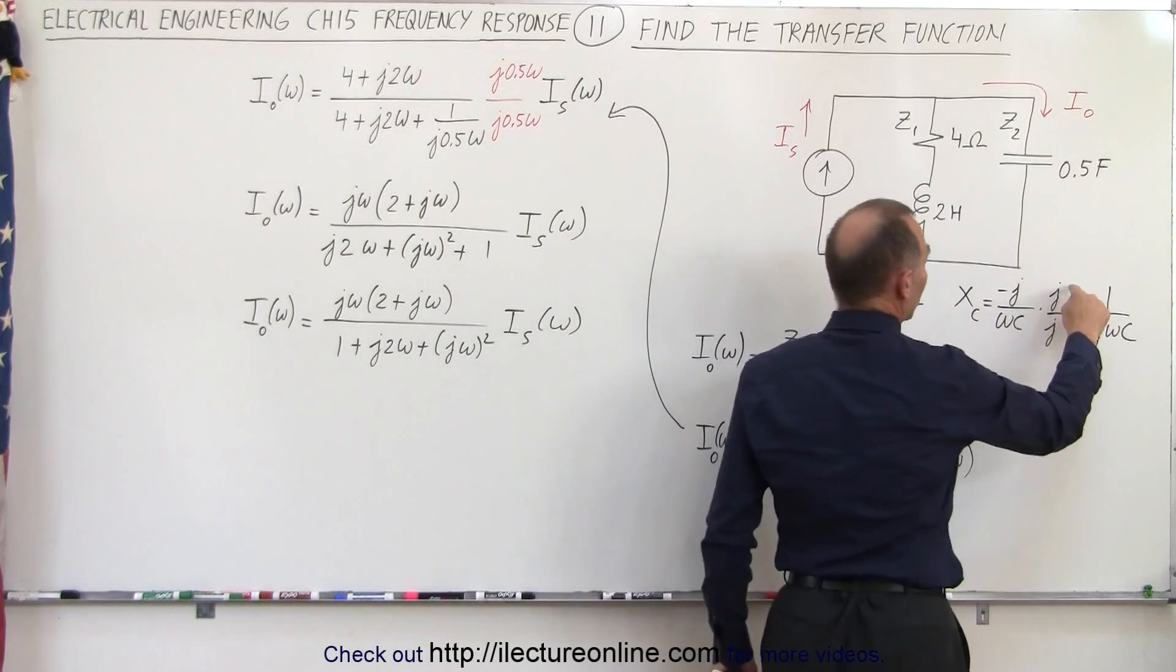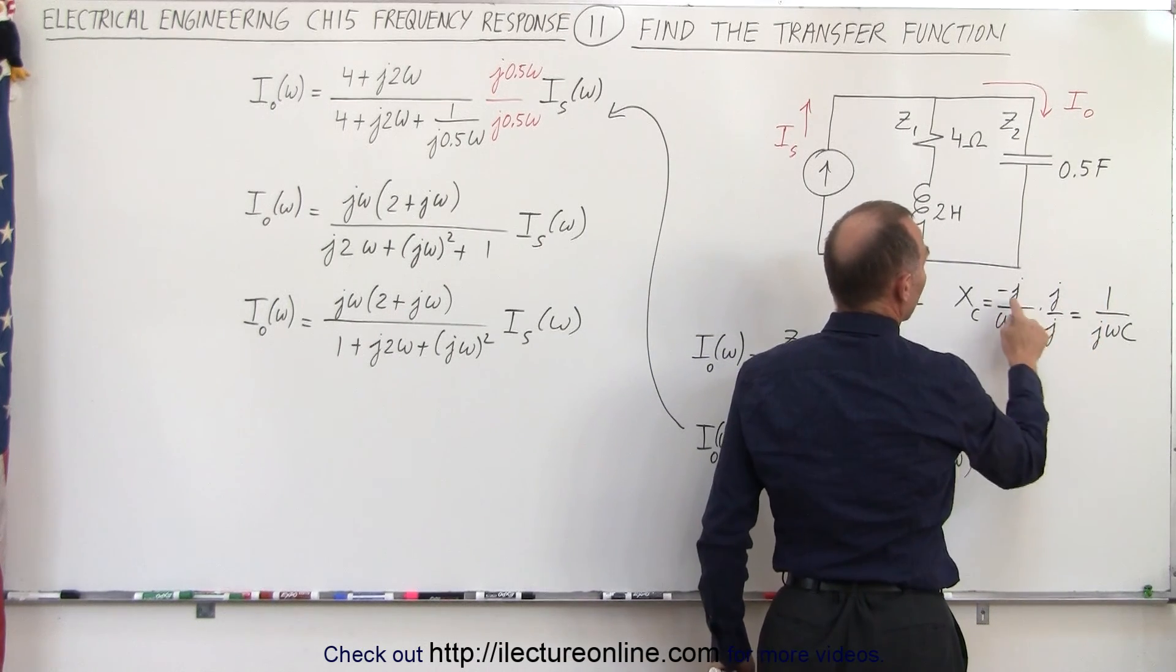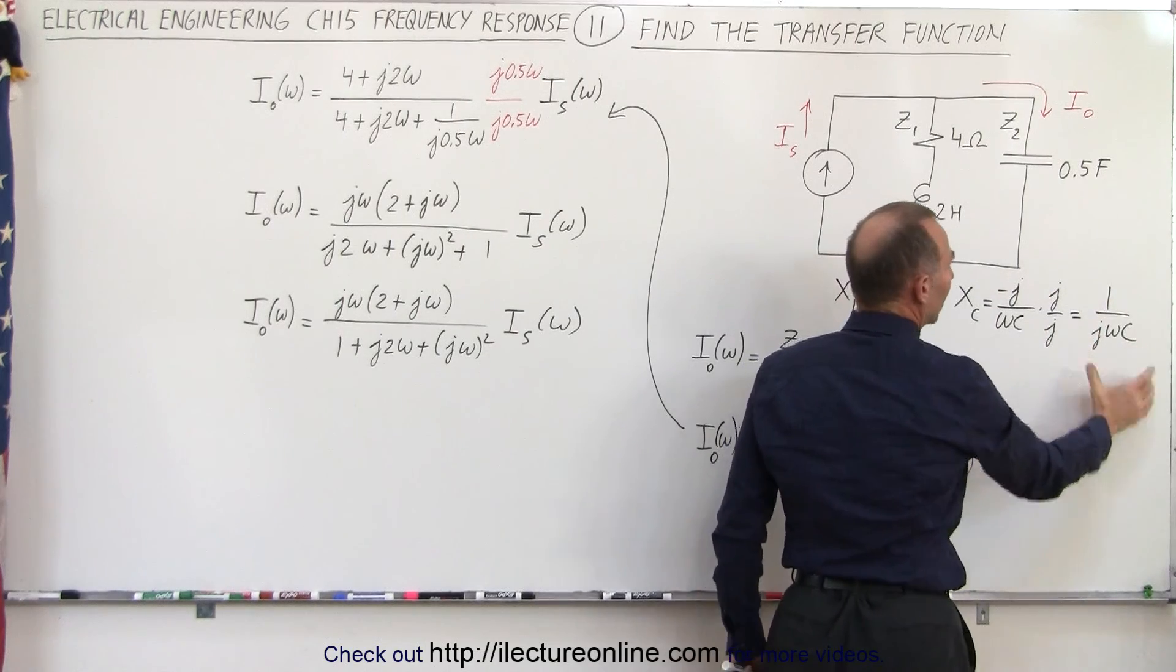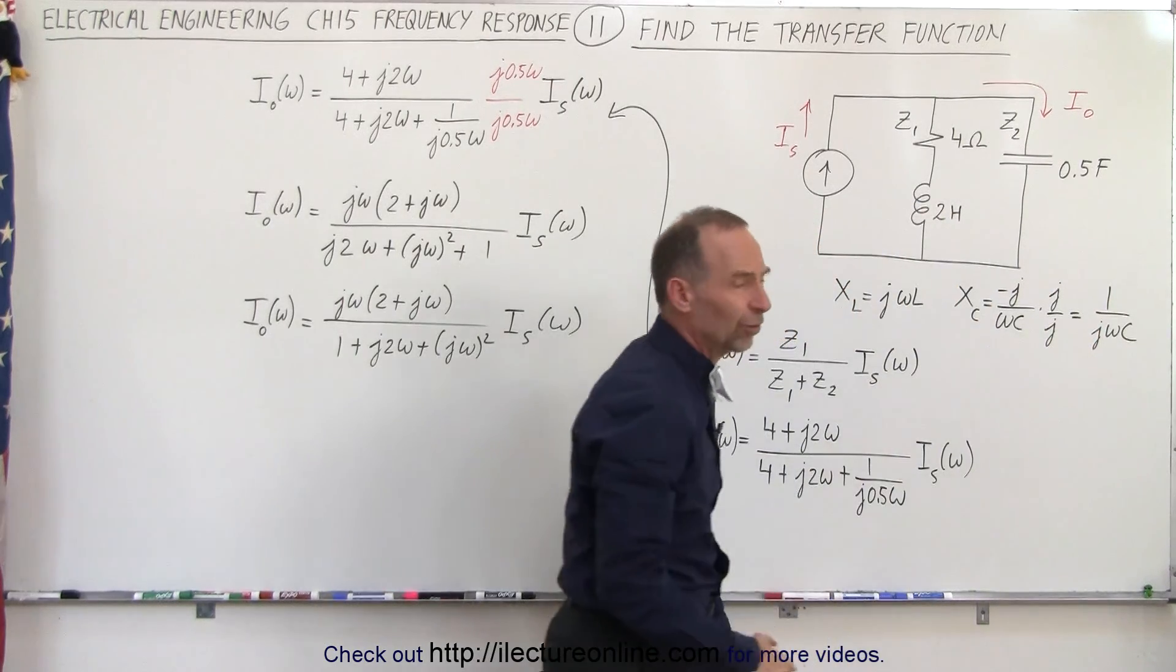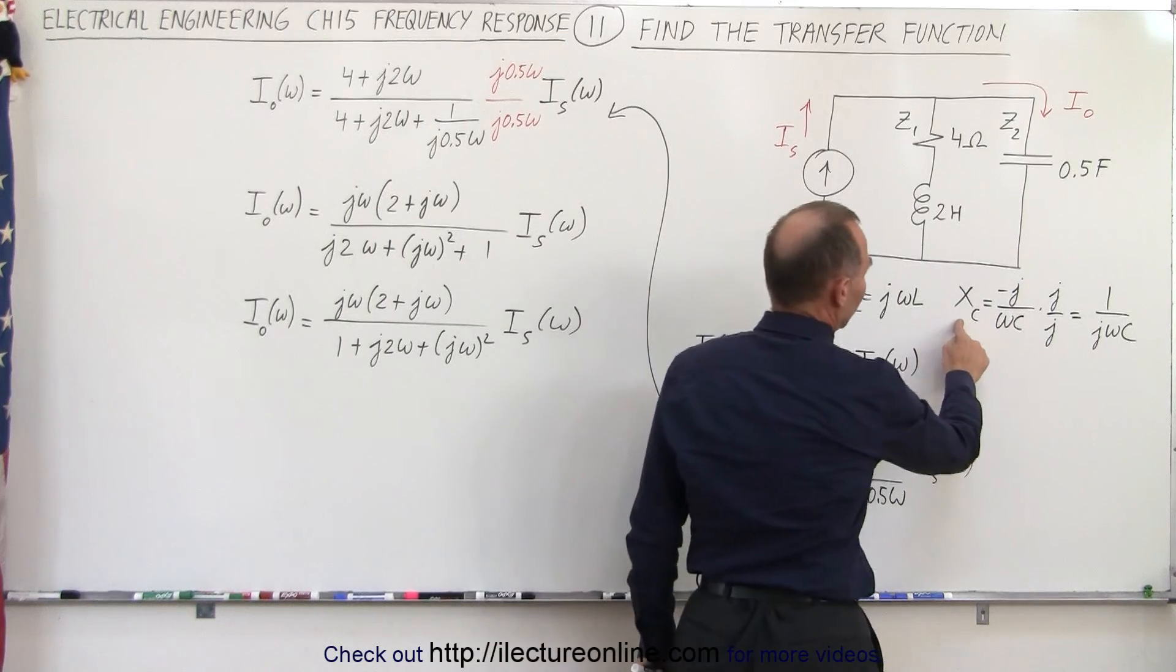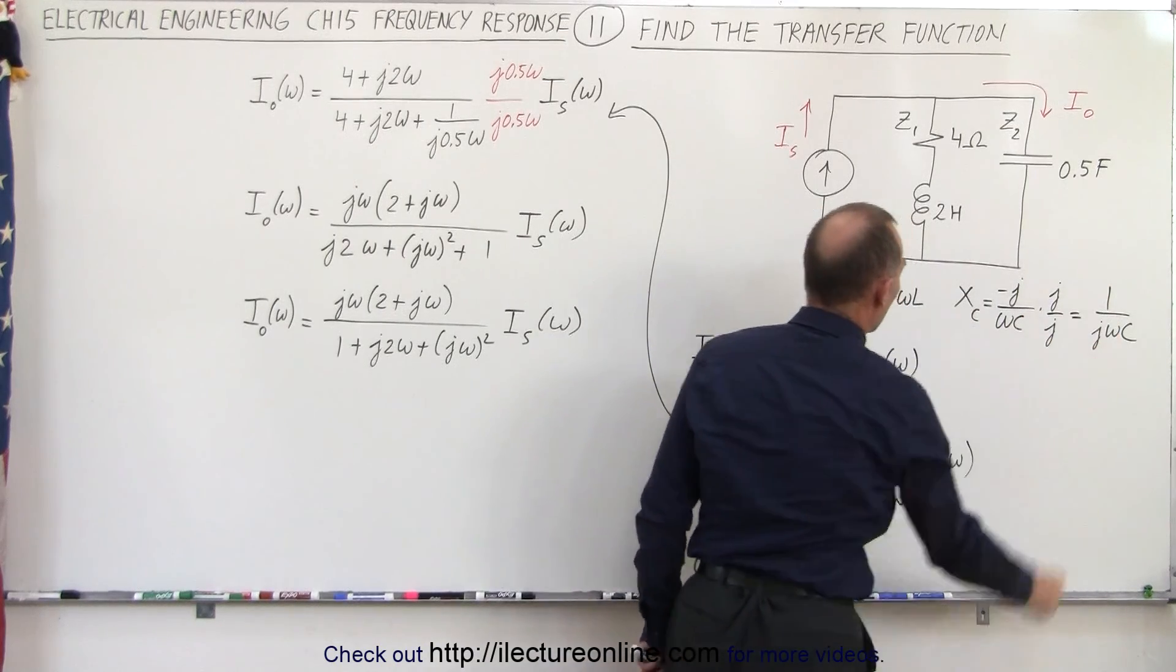Therefore, if you multiply both the top and the bottom by J, J squared is negative 1 times 1 becomes a positive 1. In the denominator we have J omega C. So typically we see the reactance across the capacitor as 1 over J omega C.